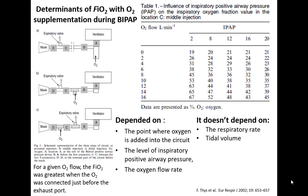The actual FiO2 delivered depends on several things: the point where oxygen is added, the level of inspiratory positive airway pressure, and the oxygen flow rate. It does not depend on respiratory rate or tidal volume. These findings can serve as good guides — many of our calculations including PF ratios benefit if we have this table in front of us.